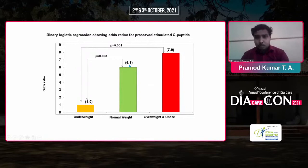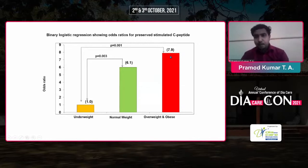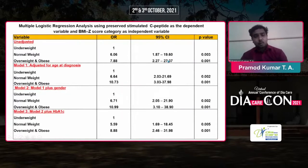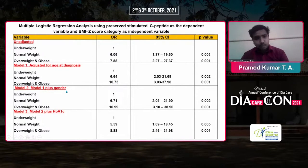We performed binary logistic regression for odds ratio and found that normal weight individuals had a 6.1-fold odds ratio for preserved C-peptide compared to underweight, and overweight and obese individuals had a 7.9-fold odds ratio. After multiple logistic regression adjusting for age at diagnosis, the odds ratio remained 6.64 for normal weight and 10.73 for overweight. After further adjustment for gender and HbA1c, the odds ratios were 6.71 and 10.9, and after additional adjustment they were 5.9 and 8.88 for overweight or obese.